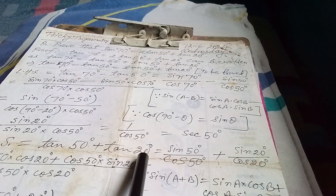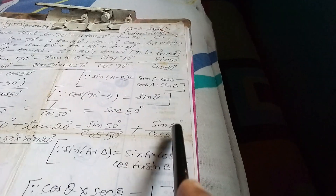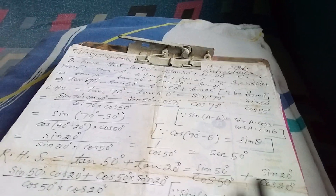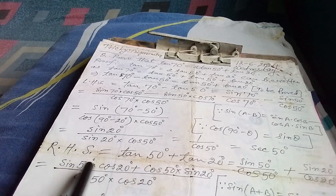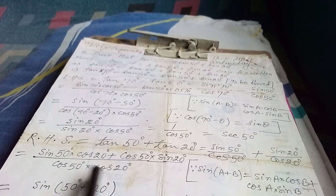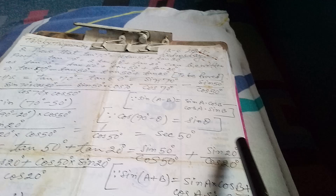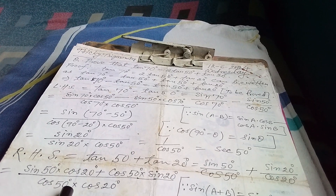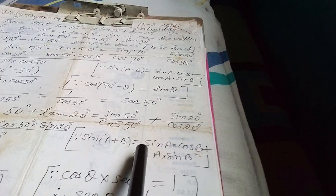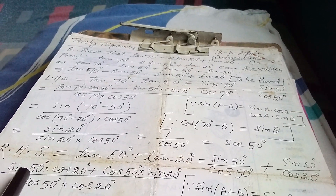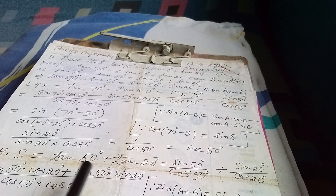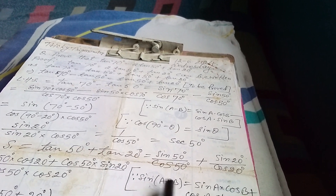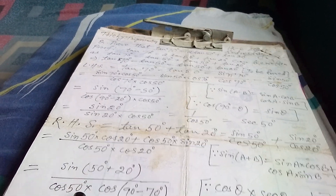Now proceeding to RHS, which is tan50° plus tan20°. tan50° = sin50°/cos50° and tan20° = sin20°/cos20°. Finding LCM: cos50°·cos20°. The numerator becomes sin50°·cos20° plus cos50°·sin20°, all over cos50°·cos20°. You know that sin(A+B) = sinA·cosB + cosA·sinB. Here A is 50° and B is 20°, so this becomes sin(50°+20°) over cos50°·cos20°, which is sin70° over cos50°·cos20°.